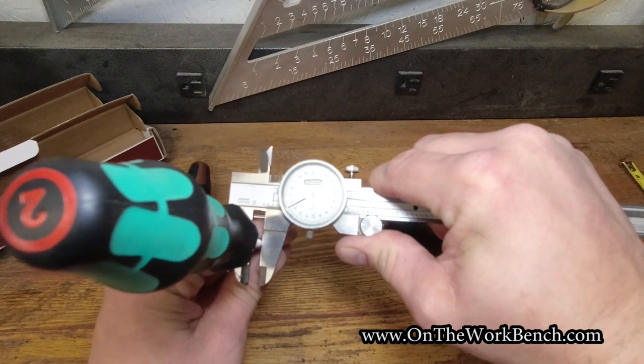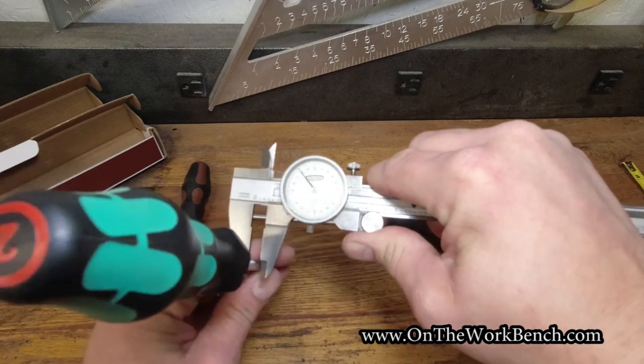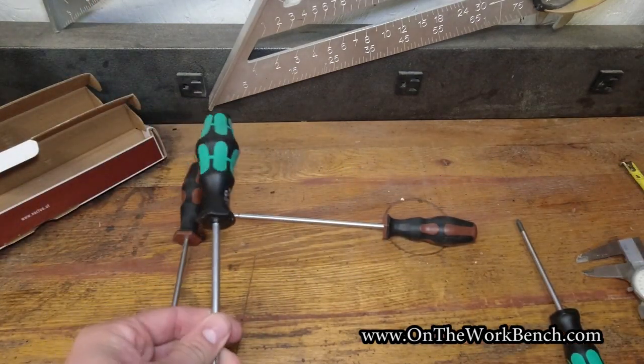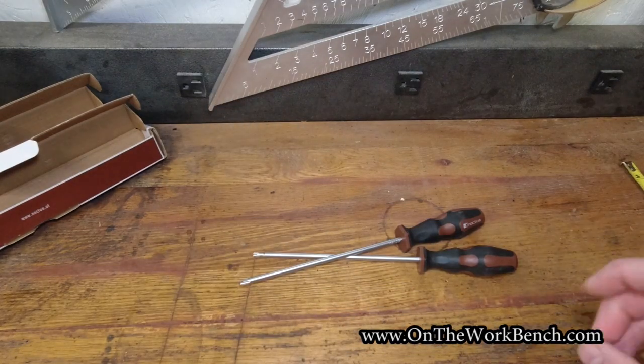And the diameter and the tip is consistent with the shaft diameter on the Vera. And that checks in at 2.35, 0.235 inches. So obviously just slightly thicker and larger on the Vera.